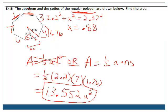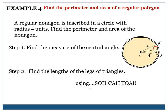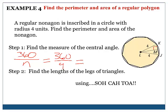Example 4: a regular nonagon is inscribed in a circle with radius 4 units. Find the perimeter and area. Step 1 — find the central angle: 360 ÷ 9 = 40 degrees. The apothem cuts the central angle in half, so each smaller triangle has a 20-degree angle at the top.